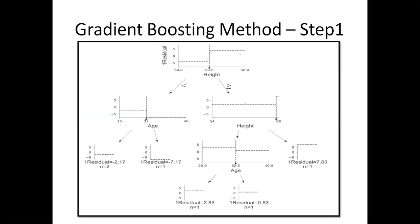The next step is to create a decision tree. At this time, I will remove the output column and instead of the target column I will use the values from the first pseudo residual column. With this, we need to build a decision tree. The output column is now the first pseudo residual and the independent variables remain height and age. You get a decision tree: if height is less than 60.5, go left; if height is greater than or equal to 60.5, go right. At the leaf nodes you get the residual values: minus 3.17, minus 7.17, 3.8, 0.8, 7.8.